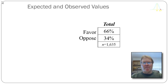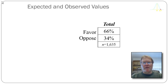If I want to compare across my independent variable — comparing white respondents to black respondents to see if there's a statistically significant difference — under the assumption of the null hypothesis, we should find 66% of the white respondents and 66% of the black respondents favoring capital punishment, and 34% for both groups opposing.